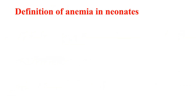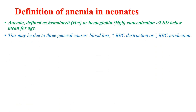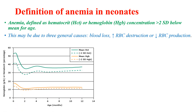When we come to the definition of anemia in neonates, anemia is defined as a hematocrit or hemoglobin concentration more than 2 standard deviations below the mean for age. This may be due to three general causes. As you see on the image, in newborns of the first and second weeks of life, hematocrit less than 45% is defined as anemia.